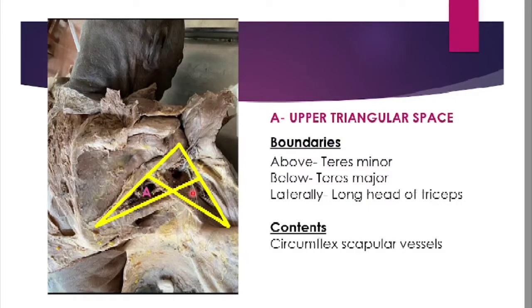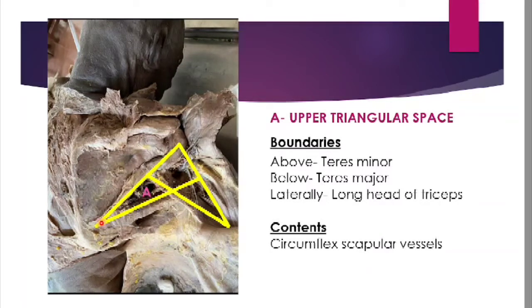The first space, A, is the upper triangular space. Its boundaries are: teres minor muscle above, teres major muscle below, and laterally the long head of triceps, which forms the base of the triangle. The apex is formed by the lateral border of the scapula where teres minor and teres major meet. The contents are the circumflex scapular vessels, which are branches of the subscapular vessels.